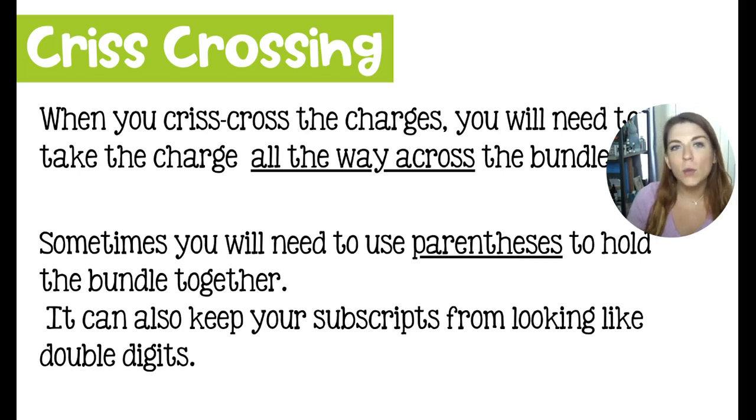The reason I like to call the polyatomic ion a bundle, though, and that you want to protect the bundle, is because when you crisscross, the charge needs to go all the way across the bundle of atoms. And that's in both cases. So the charge on the polyatomic ion must go all the way across, and then the charge from typically the metal has to come all the way across the bundle.